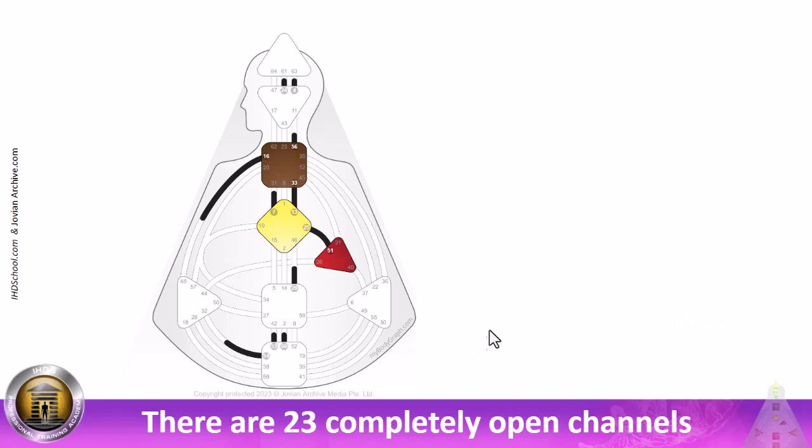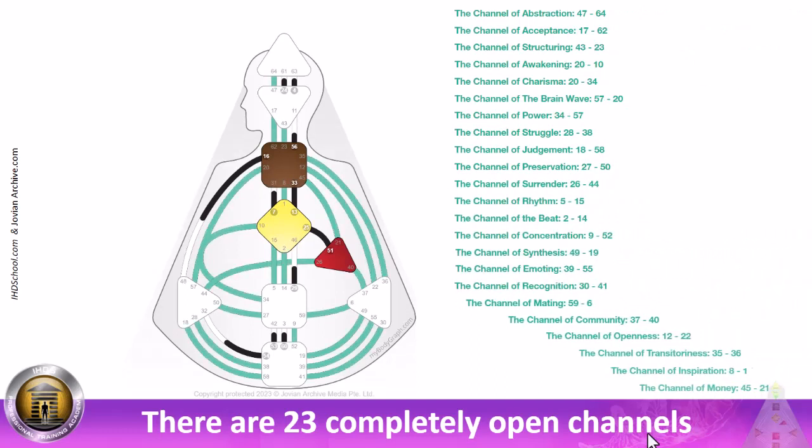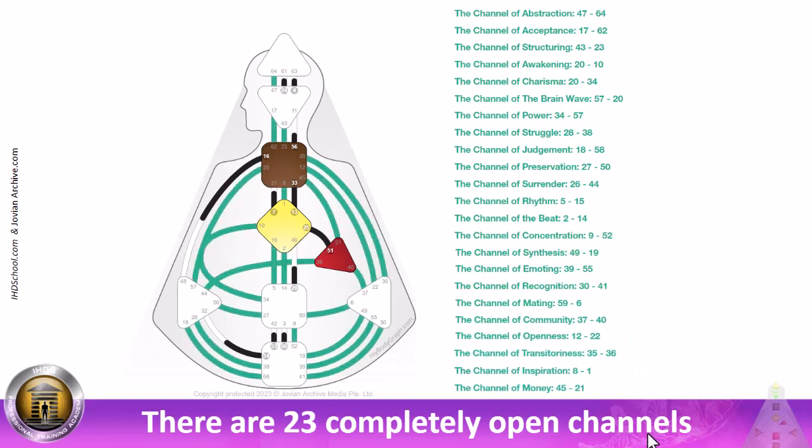So, if we look at this body graph in that respect, there are 23 completely open channels. What does that mean? It means they are reflected channels. All of these channels being reflected as far as the receptivity to others. This is where we have openness and abundance of openness, wisdom and learning potential about others.